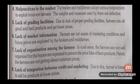Seventh defect: Lack of organization among farmers. In rural areas, farmers are not well organized — there is no union among them. But buyers in the mandis are well organized to prevent prices from rising. Hence farmers are not getting even the minimum prices for their produce.